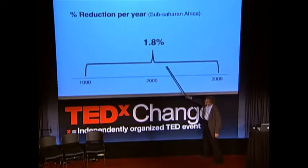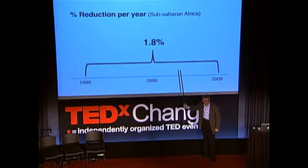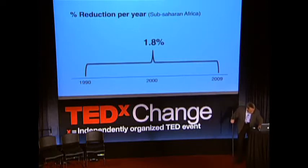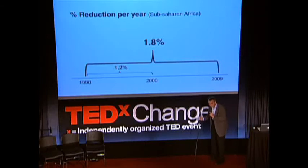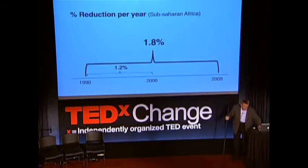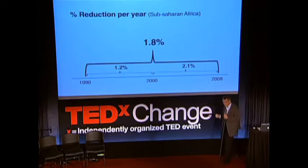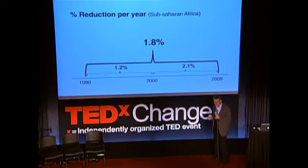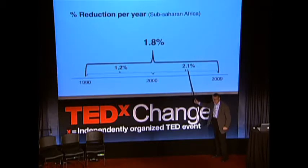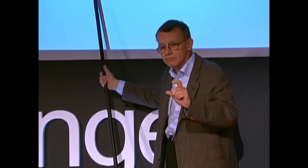Is it fair to measure this over 19 years? An economist would never do that. I've divided it into two periods: in the 90s, only 1.2%. Whereas now — it's like Africa had a slow first year and is now going into a much faster second year.